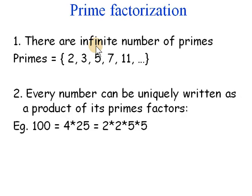What is prime factorization? There are some basic facts about prime numbers. Prime numbers are numbers which cannot be factored into smaller integer factors. There are infinite number of primes: 2, 3, 5, 7, 11, and we can prove there are infinite of them. Every number can be uniquely written as a product of its prime factors. For example, 100 is 4 times 25, which is 2 times 2 times 5 times 5. So 2 and 5 are prime numbers.